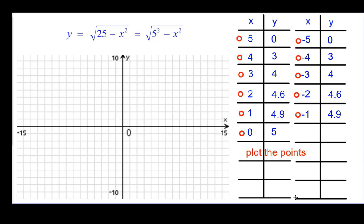So we're going to go ahead and plot these points. Going from right to left this time, 5, 0, 4, 3, 3, 4. And then the decimals, 2, 4.6, 1 almost 5, 4.9. And then the y-intercept at 0, 5.